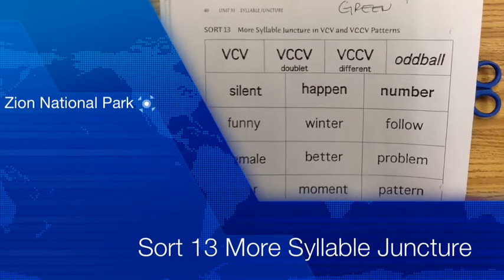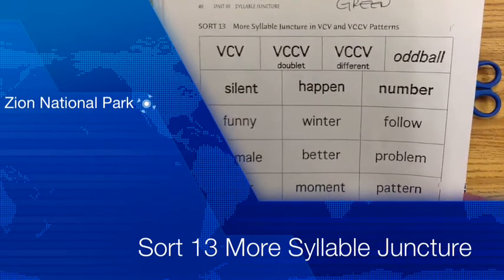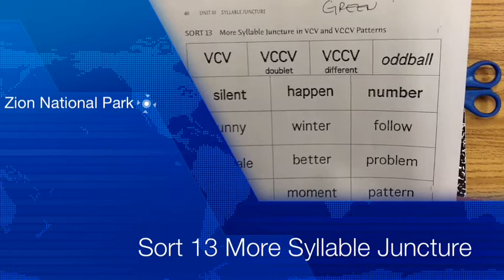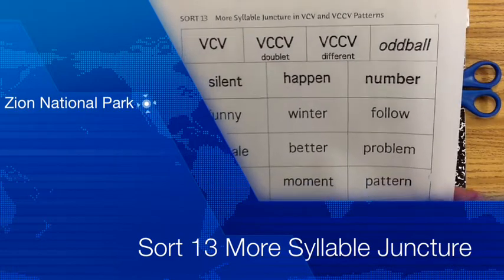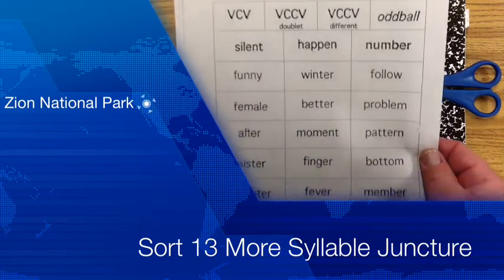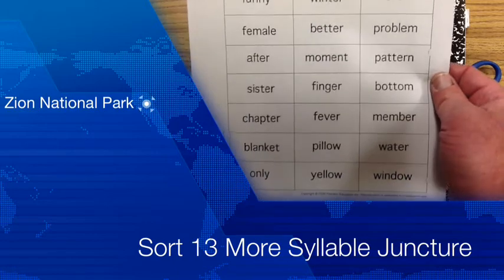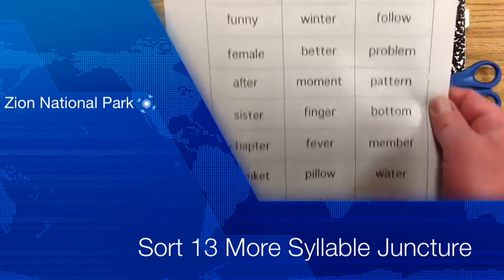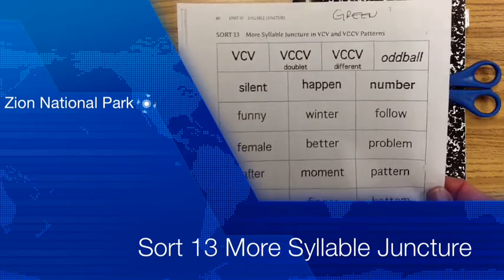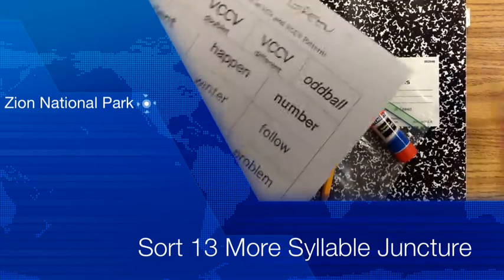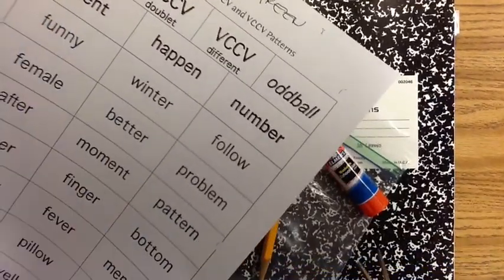This week's spelling list is Sort 13. This is the green list and it's more syllable juncture in vowel-consonant-vowel and vowel-consonant-consonant-vowel patterns. Let me show you this week's words. Aren't they beautiful? Aren't they wonderful? Let's take a second and cut them out. Pause the video and cut. Go.